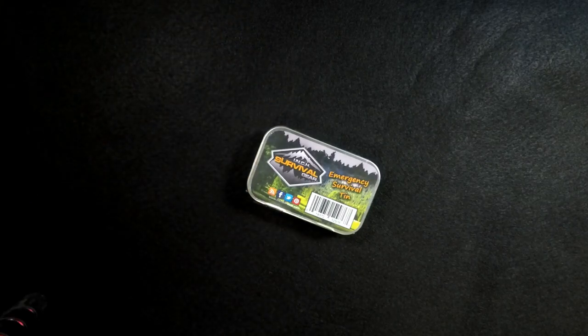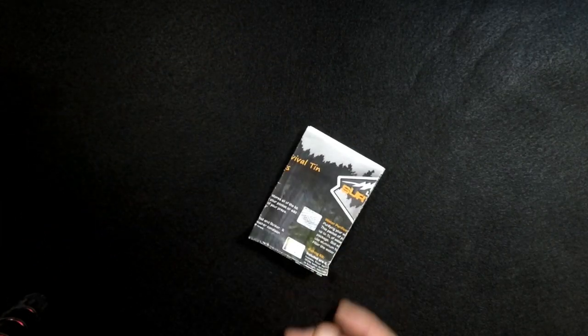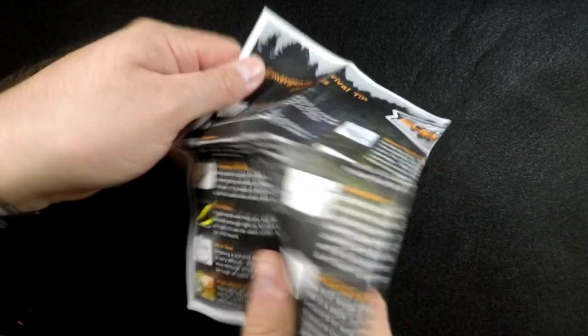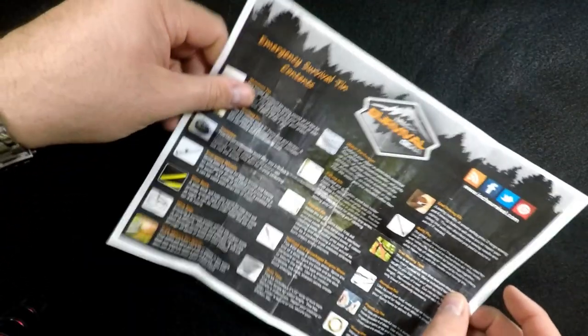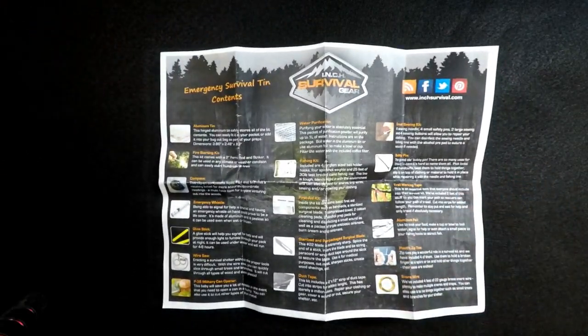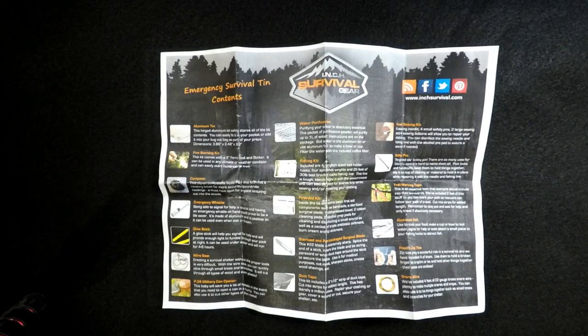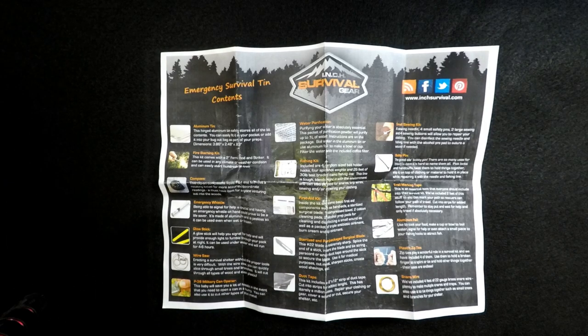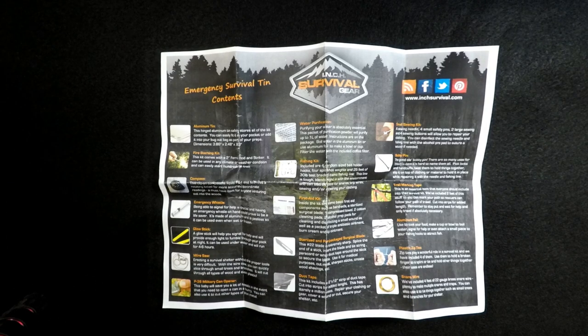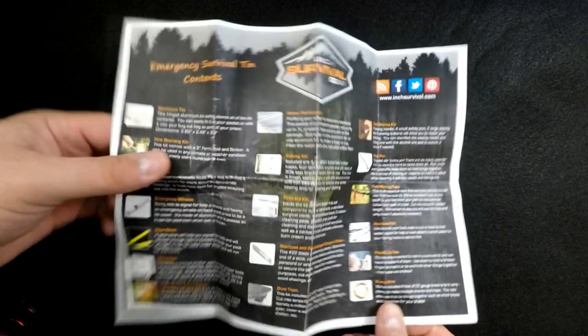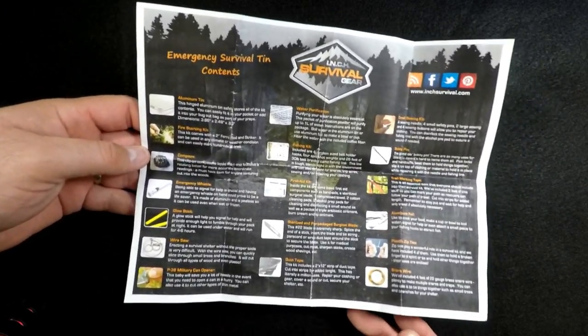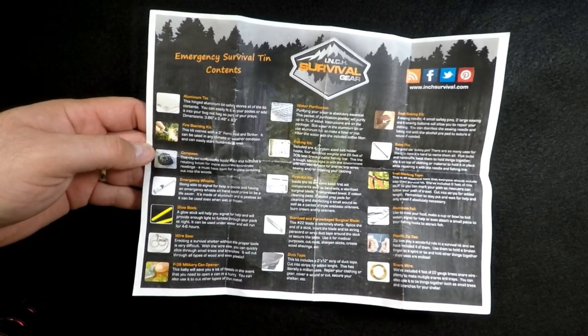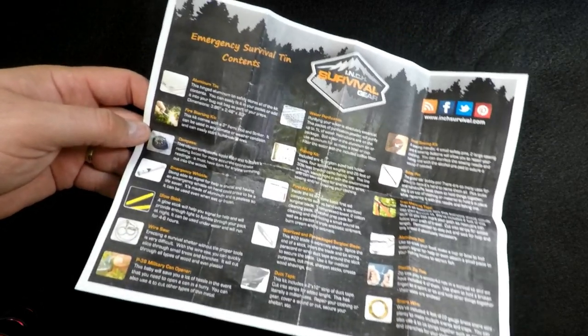So the survival tin itself comes with all the stuff, and inside the package you get this piece of paper that tells you what's in it. I'm not going to sit here and go through the whole thing, but I just wanted to show you that they do include it. It's very nice color pictures, the titles of everything that's in there and what you can use it for.